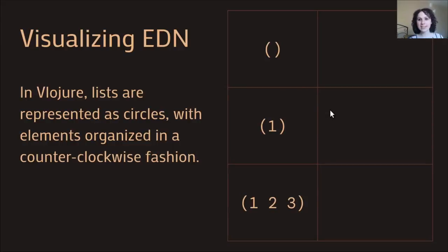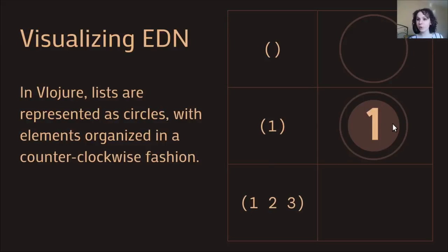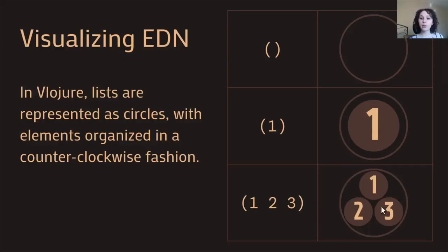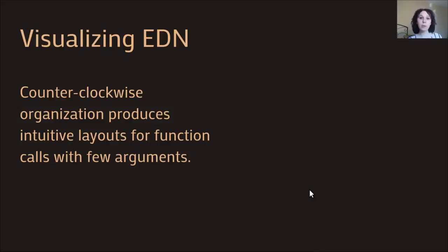Here I have a couple of different lists as examples. An empty list in Vlojure is just represented as an empty circle. A list of one element looks like a circle with a smaller circle inside. A list of three elements has the first element at the top of the enclosing circle and the remainder organized in a counterclockwise pattern.